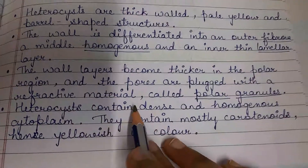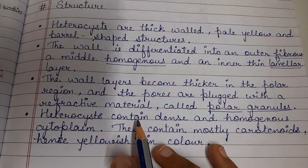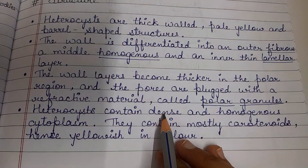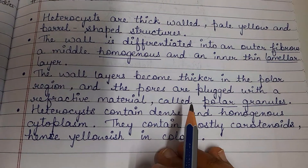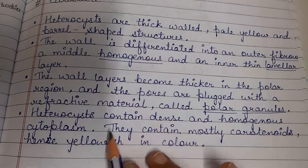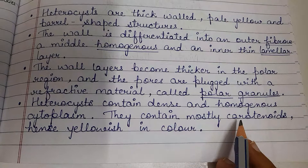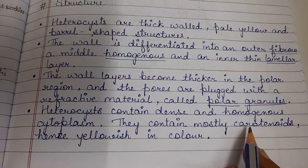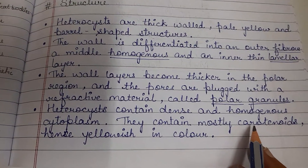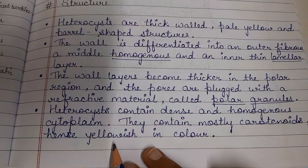Heterocysts contain dense and homogeneous cytoplasm. They contain mostly carotenoids, which are yellowish pigments present in the heterocyst.